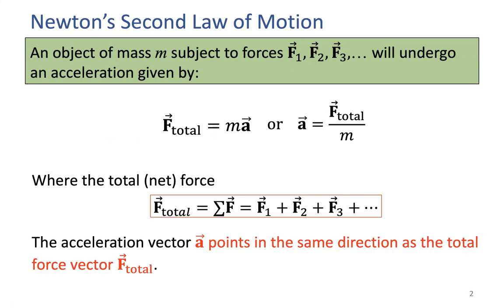Newton's second law is the case when there's an object acting on that object whenever we have a net force — a non-zero net force. So we can relate that non-zero net force to the mass and the acceleration, which the object is going to move on because of the effect of this net or total force. F equals ma.